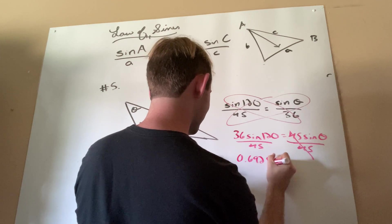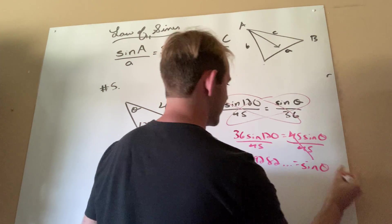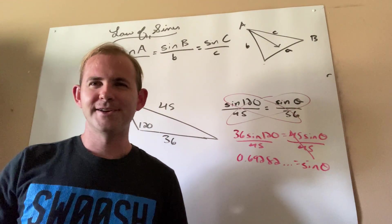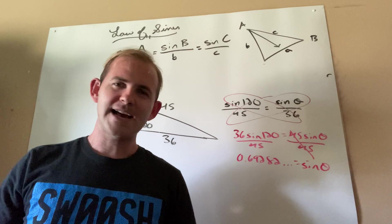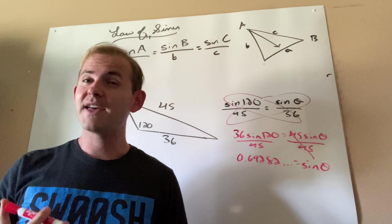And I get this really weird decimal here. 0.6928 something other is equal sine theta. So we're almost there, guys. We're like nine tenths of the way there. Problem is, they didn't ask me for sine theta. What they asked me for was the value of the angle itself.